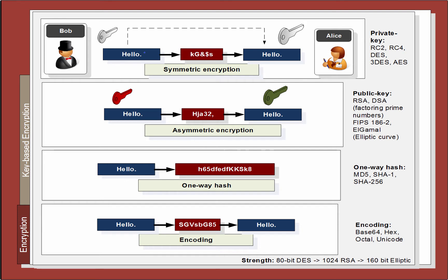Just to recap, what we have is symmetric encryption. With symmetric encryption, we use the same key to encrypt as we do to decrypt. Typical examples here are RC2, RC4, DES, 3DES, and AES. In this presentation we'll have a look at 3DES and how that can encrypt and decrypt.